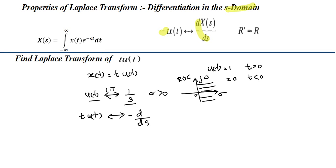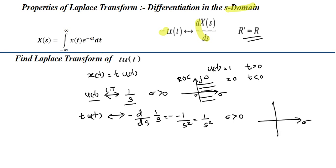We already know the transform of u(t) is 1/s, so we substitute X(s) = 1/s. Differentiating: 1/s is s^(-1), so d/ds of s^(-1) gives minus s^(-2), which is minus 1/s². Then minus into minus gives plus, so the Laplace transform of t·u(t) is 1/s², with the same ROC: sigma greater than 0, as shown on the sigma-jω plane.